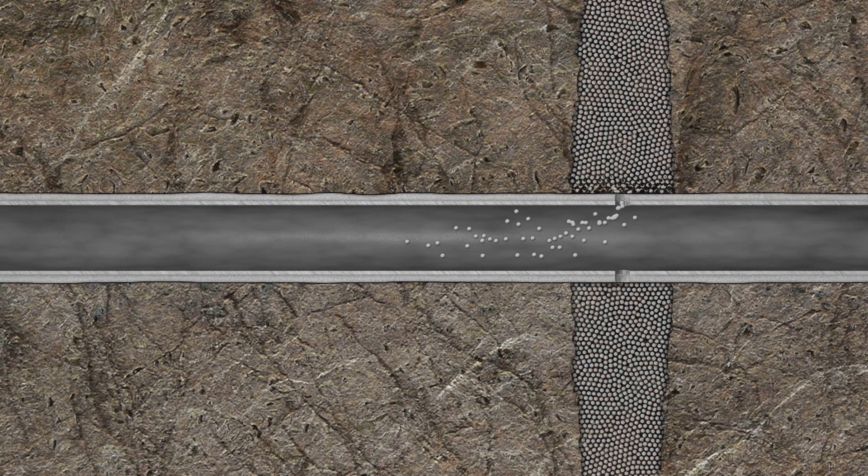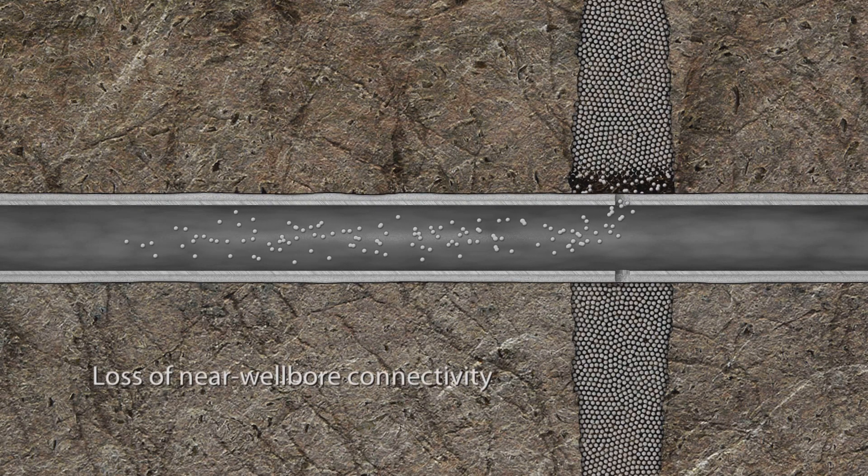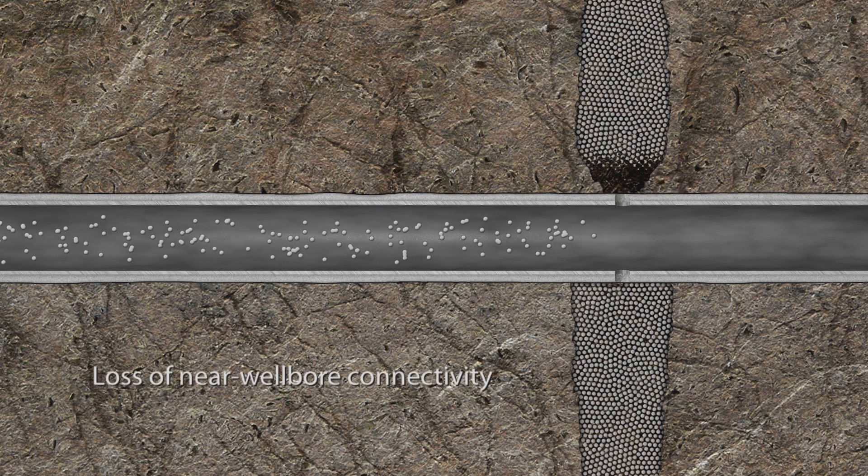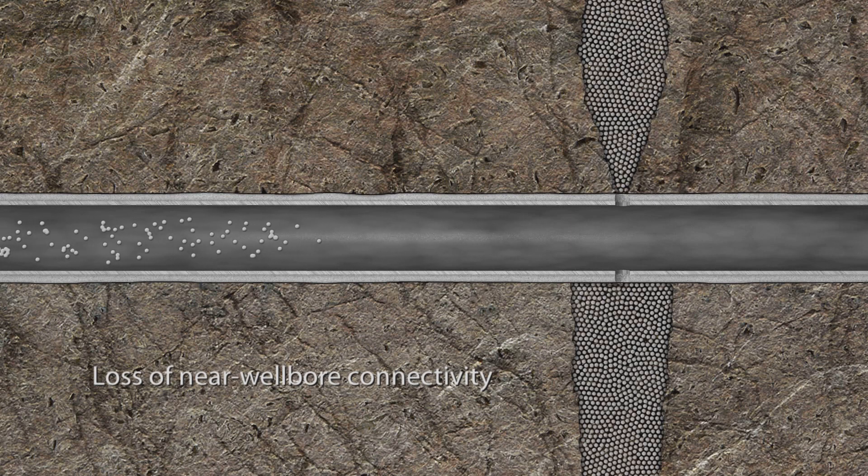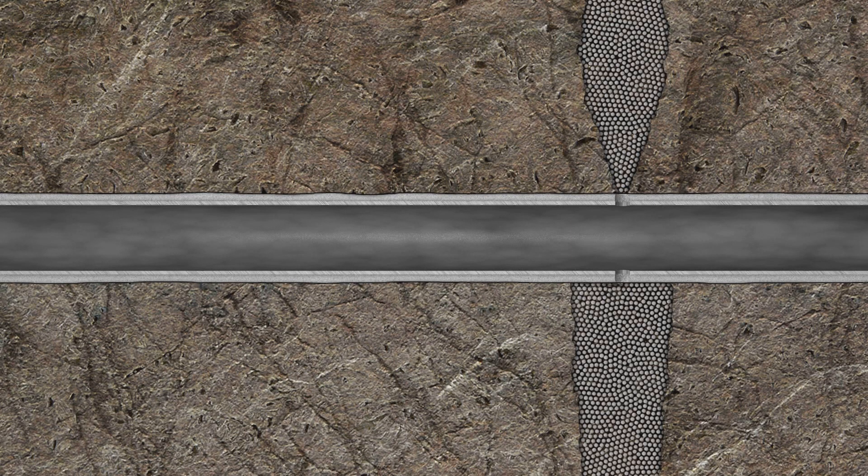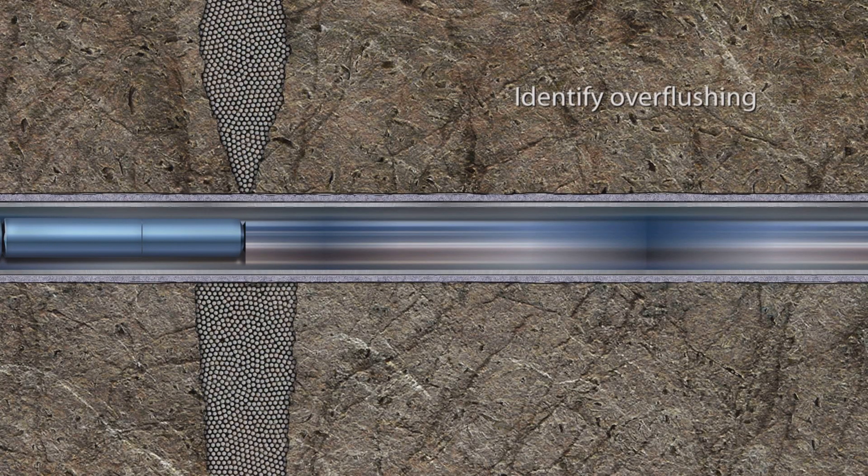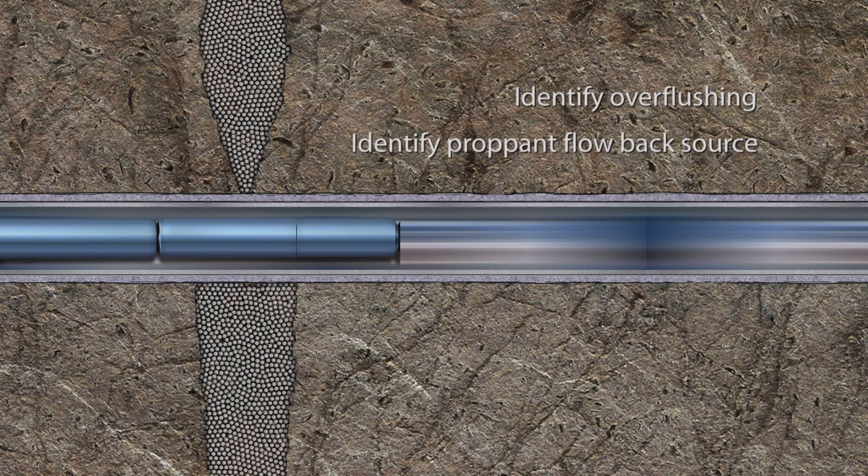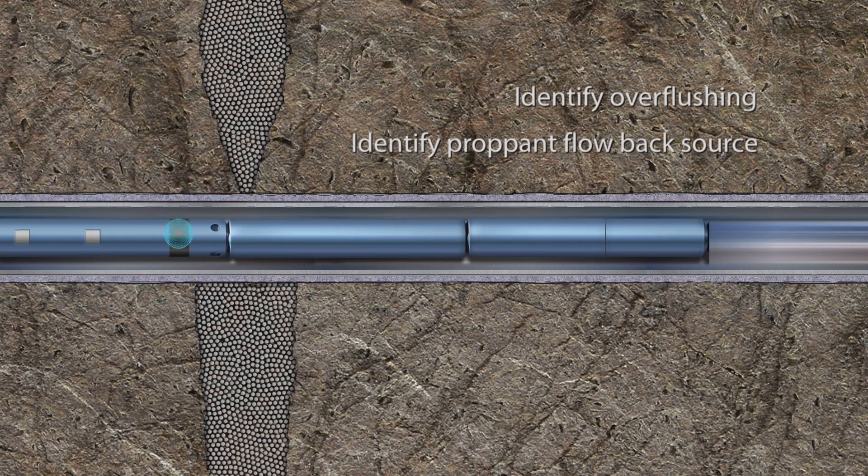Overflushing at the end of a stage and propant flow back can lead to loss of near-wellbore connectivity as well as reduced conductivity, in turn reducing production and EUR. The FractureVision service enables you to identify overflushing and to identify the amount of propant near the wellbore to estimate near-wellbore connectivity.